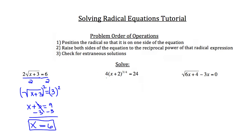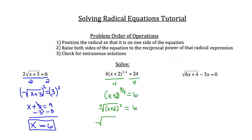For the next problem, we again get the radical by itself first. Dividing both sides by 4, we get x plus 2 to the 3/4 power is equal to 6. Another way of writing x plus 2 to the 3/4 power is the fourth root of x plus 2 cubed, still equal to 6. Expanding that gives the fourth root of x cubed plus 6x squared plus 12x plus 8, all under the radical, equal to 6.